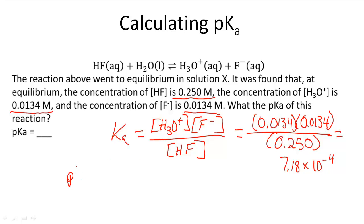Now that we have that, pKa is calculated by doing negative log of Ka. So that equals negative log of 7.18 times 10 to the negative fourth power, and I get an answer of 3.144. So the pKa for this problem is 3.144.